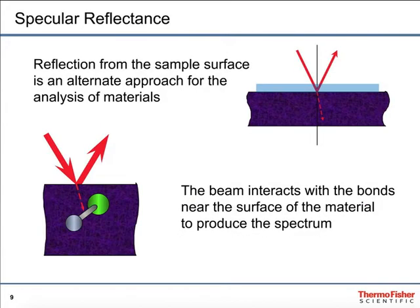In specular reflectance, the sample is placed on a reflective surface. In the cartoon in the upper right corner, you see the light blue film laid on top of the darker surface. The IR beam passes down through the film, reflects off the surface, back through the film, and out, interacting with the sample twice. This is a very good technique for thin films and thin layers on surfaces when the surface is reflective, and the IR beam reports on the bonds near that surface to produce the spectrum.